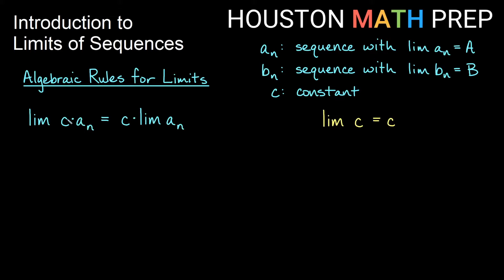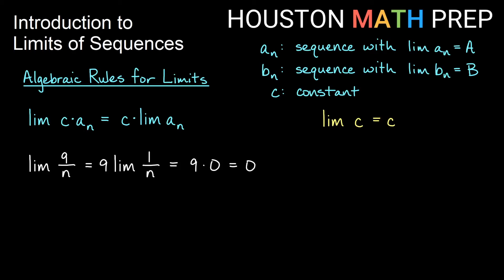The next law: the limit of a constant times a sequence equals the constant times the limit of that sequence. You can pull the constant out front — this is true with limits, sums, derivatives, antiderivatives. For example, the limit of 9 over n: think of this as 9 times the limit of 1 over n, which we know is 0, so 9 times 0 gives a limit of 0. Another example: 9 times (7/6) to the n — pull the 9 out; (7/6) to the n is geometric with ratio greater than 1, so it diverges, and 9 times infinity still diverges.